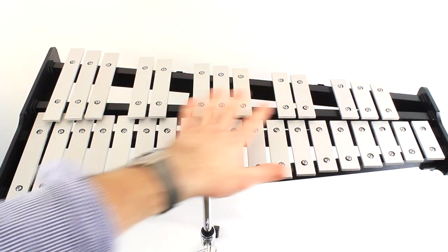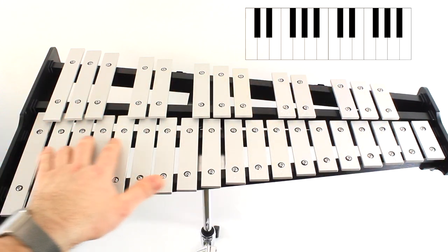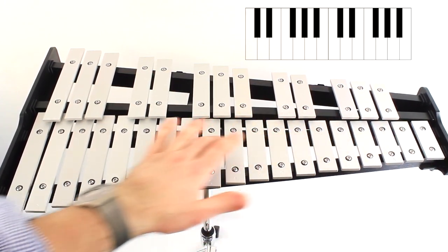The notes of the bells are organized just like a piano. The top row of bars is like the black keys of the piano, and the bottom row of bars is like the white keys of the piano.